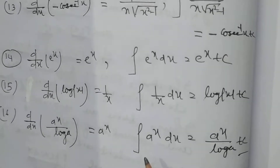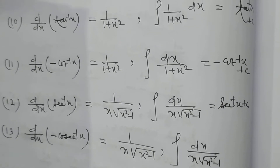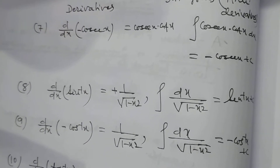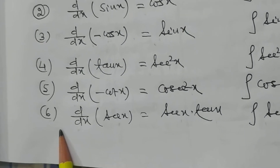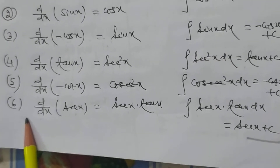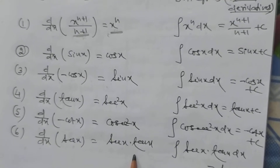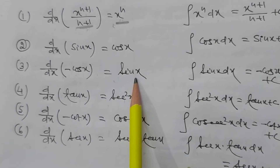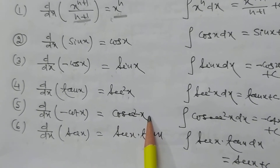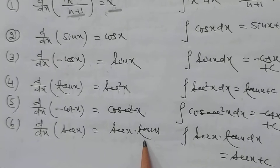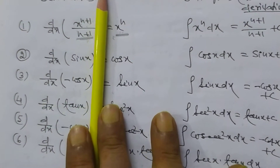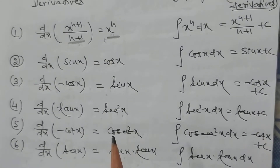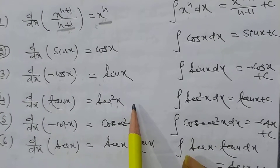It is important that you go through these formulas and try to remember them, as they will be helpful for solving problems. When you look at the six trigonometric functions, you observe that in this list there is no integration of tan x, no integration of sec x, no integration of cosec x, and no integration of cot x — because we cannot find any function whose differentiation directly gives these.